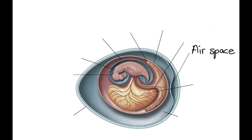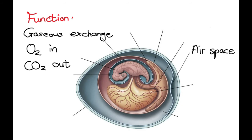Then we have the air space, which is a little air pocket here at the bottom of the egg, or the blunt side of the egg. Now because it contains air, it's going to be responsible for gaseous exchange, so that oxygen can go in and carbon dioxide can go out. Remember the shell is also slightly porous to allow gaseous exchange to take place.